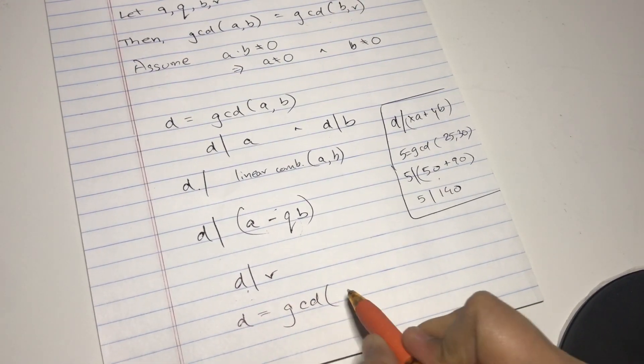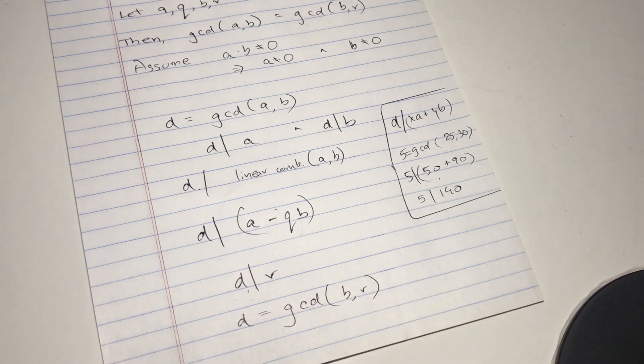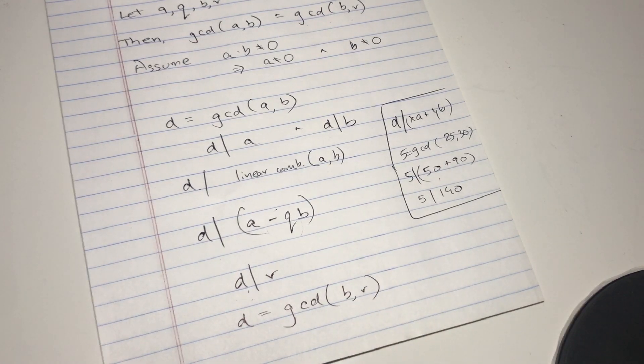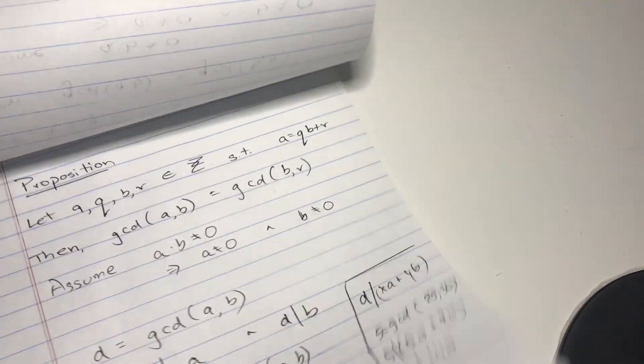But yeah, this is a start. What we do next is this: we must show that d is the gcd of b and r. It actually suffices...